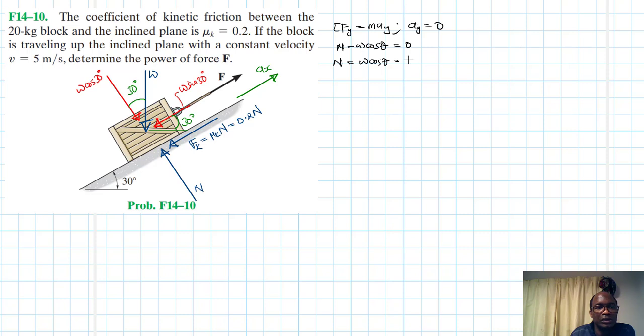And this is just equal to 20 kg by 9.81 cos 30. Therefore Fk, which is the friction, is μk times N, and this is just 0.2 by 20 by 9.81 cos 30.